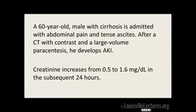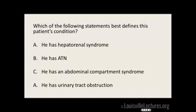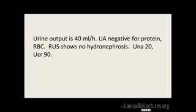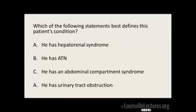But first, let's start off with a case. You have a 60-year-old man who has cirrhosis. He was admitted with abdominal pain and tense ascites. After a CT with contrast, he gets a large-volume paracentesis, and he develops an AKI. Creatinine went from 0.5 to 1.6 in 24 hours. Urine output is 40 cc an hour. His UA is negative for protein or RBCs. What do you think this patient has?